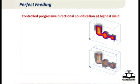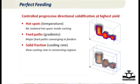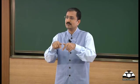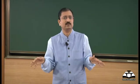For perfect feeding, there are five principles. Rule one: there should be no isolated hot spots in the casting — any hot spot should be shifted to the feeder. Rule two: there must be good feed paths; feed paths should not converge, merge, and stop inside the part — they should all converge and stop in the feeders, meaning the feeder is feeding the casting. If feed paths stop in the casting, the casting is feeding itself, which we do not want.